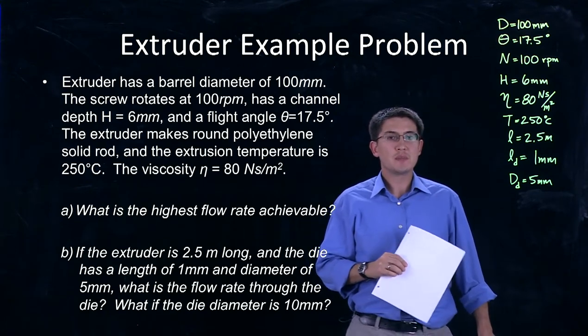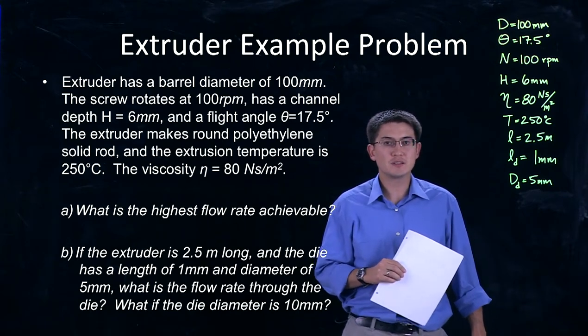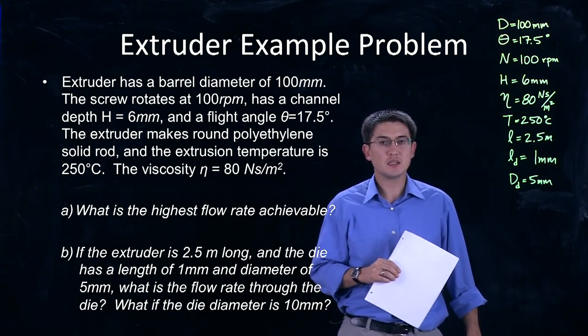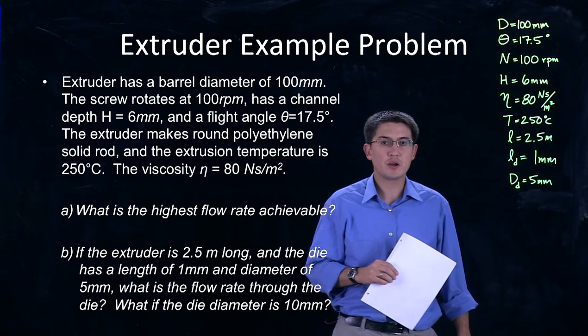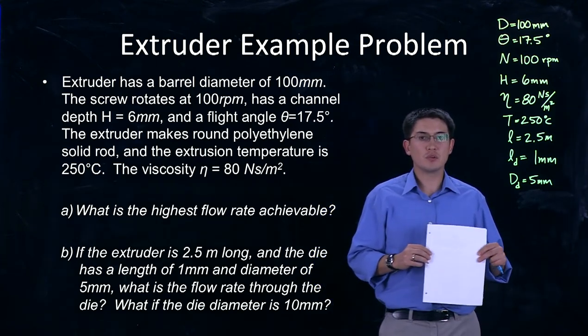The extruder is making round polyethylene solid rod at a temperature of 250 degrees Celsius, which has a viscosity of 80 Newton-seconds per square meter. We first want to know what is the highest flow rate achievable.